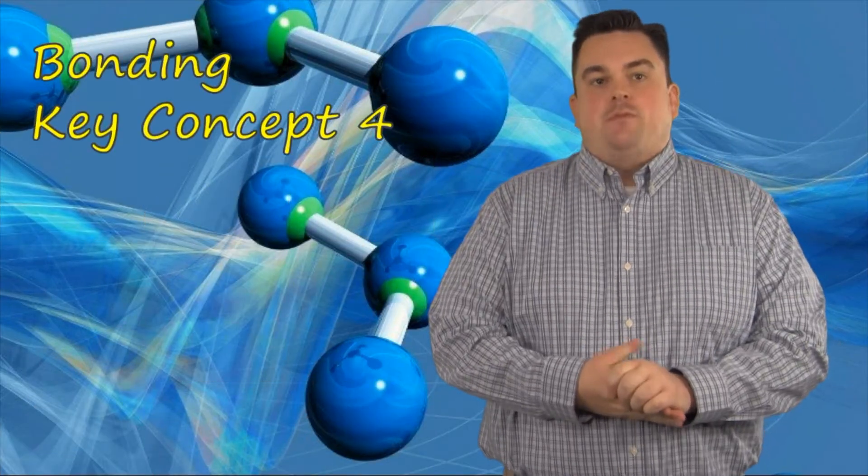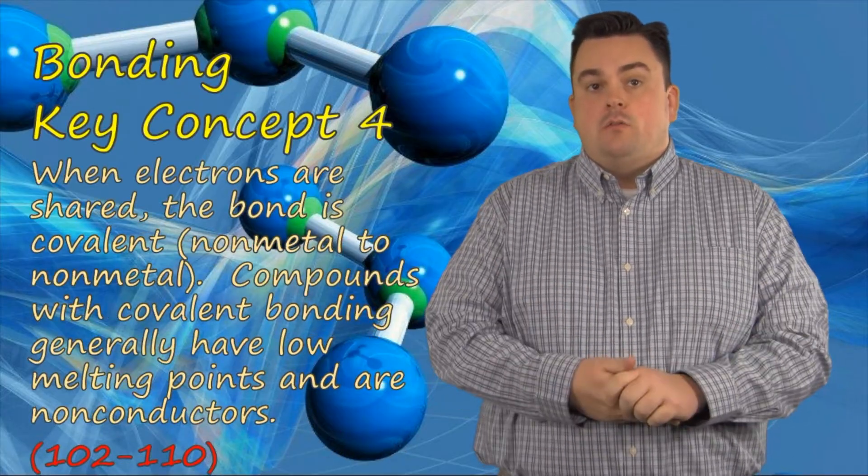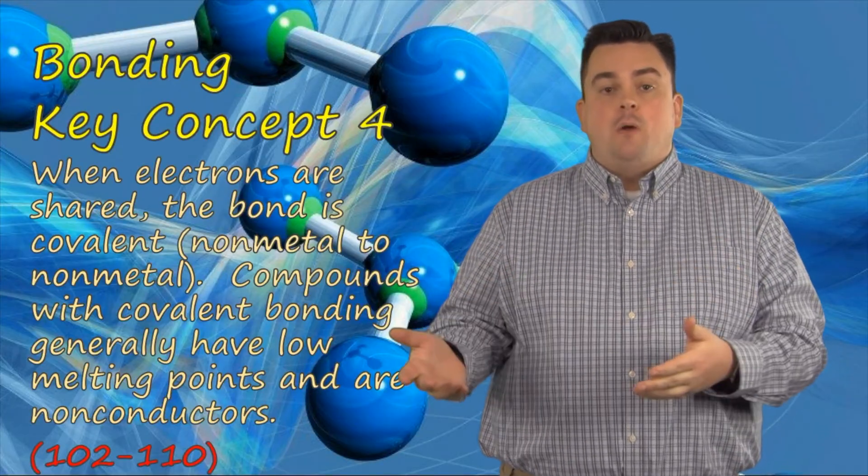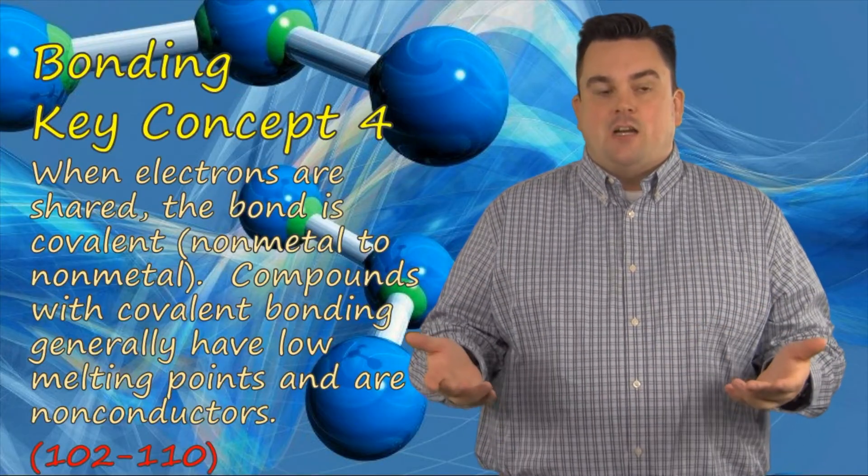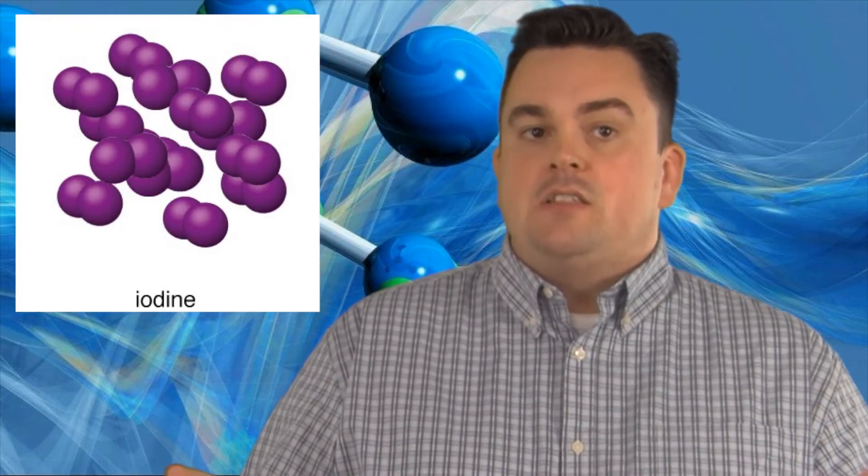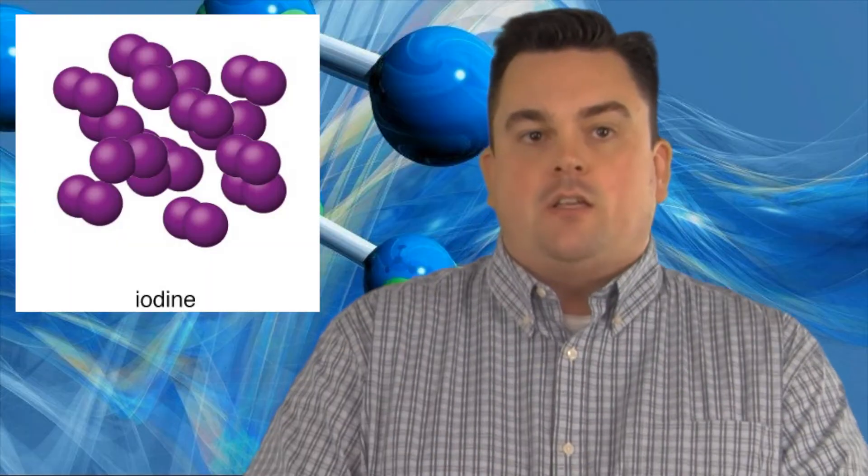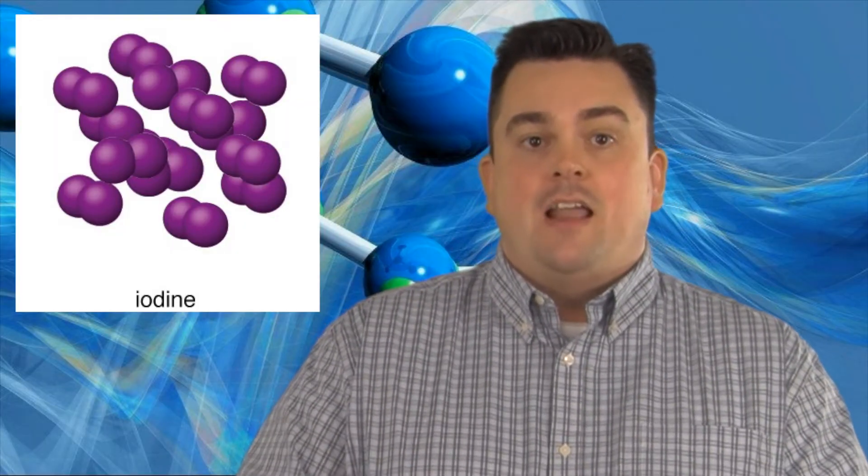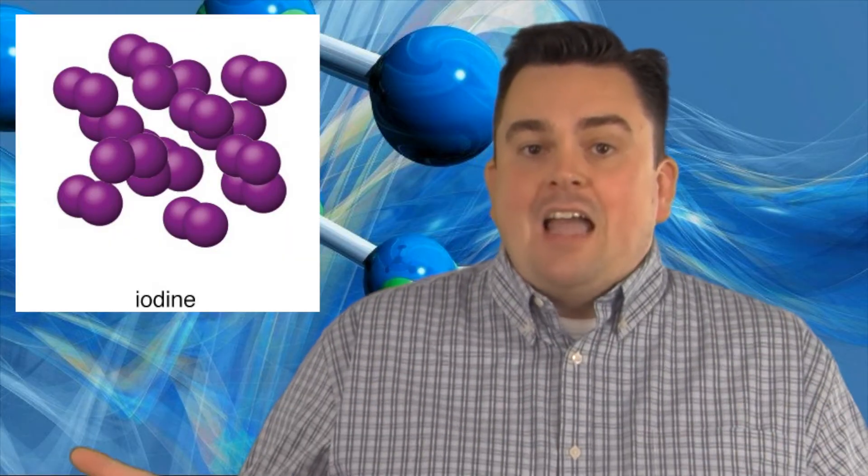Bonding key concept four. When electrons are shared, the bond is covalent, non-metal to non-metal. Compounds with covalent bonding generally have low melting points and are non-conductors. Since two non-metals both want to gain electrons, they must share, and a covalent bond is formed. Covalently bonded substances form distinctly separate molecules. These molecular compounds are not tightly held together like ionic compounds are. And as a result, they have low melting points and tend to be soft. They have no ions, so they do not conduct electricity.